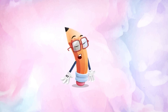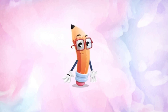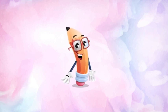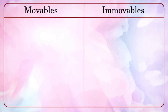Now let's try to drag them in the proper column. We have two columns — one for the movables and one for the immovables.